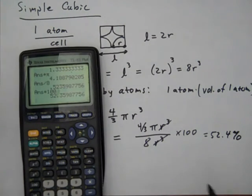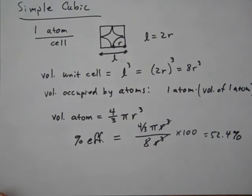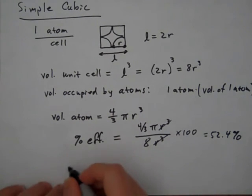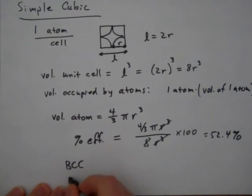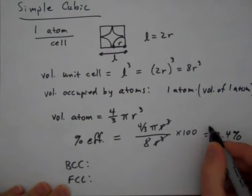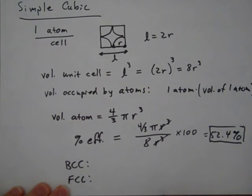And so we get a number that's about 52.4%. So of the total space in a simple cubic unit cell, 52.4% is actually occupied by atoms. So if you look up in your textbook, it will give you the packing efficiencies for body-centered cubic and face-centered cubic as well, and those will be calculated in a similar way.